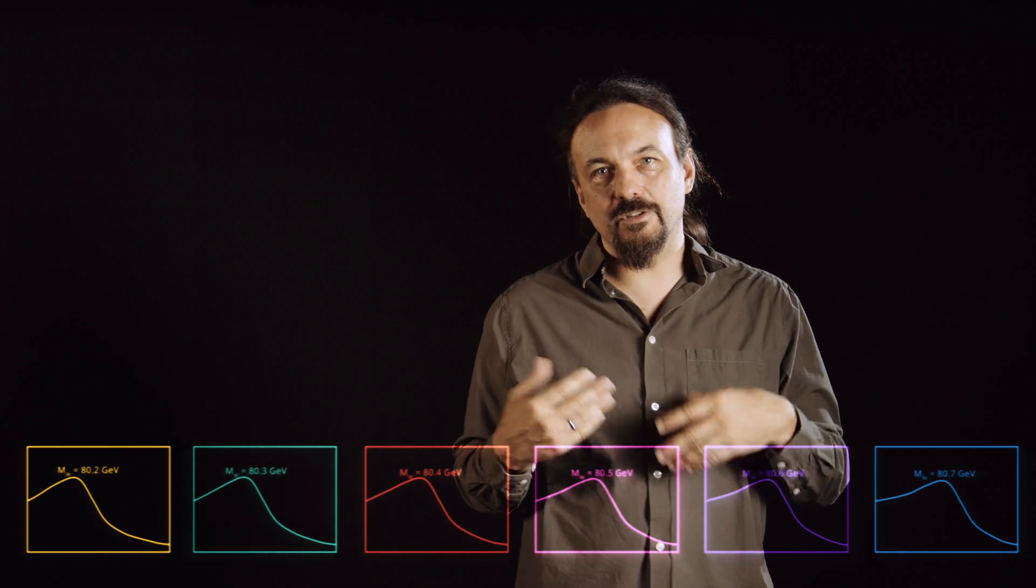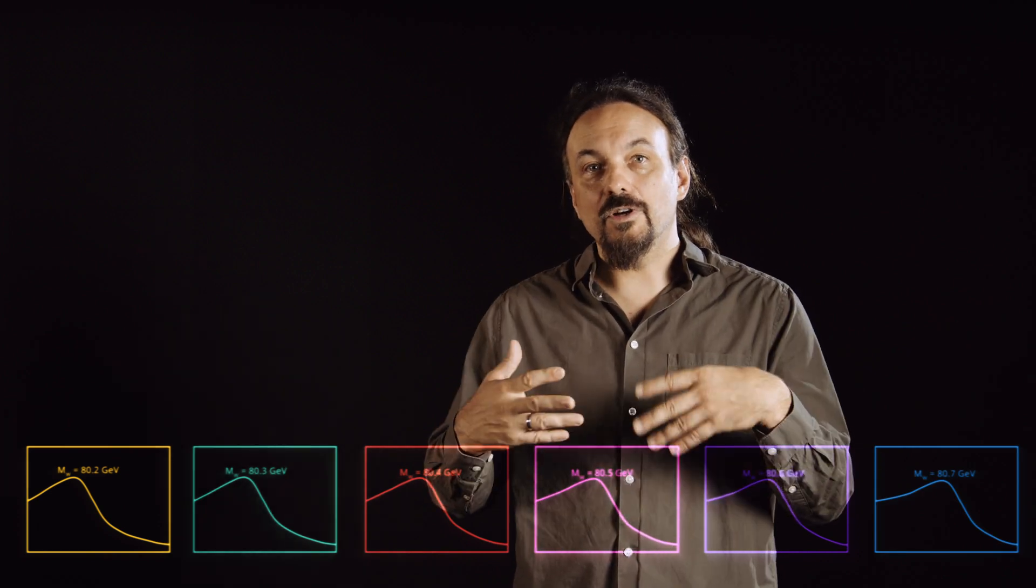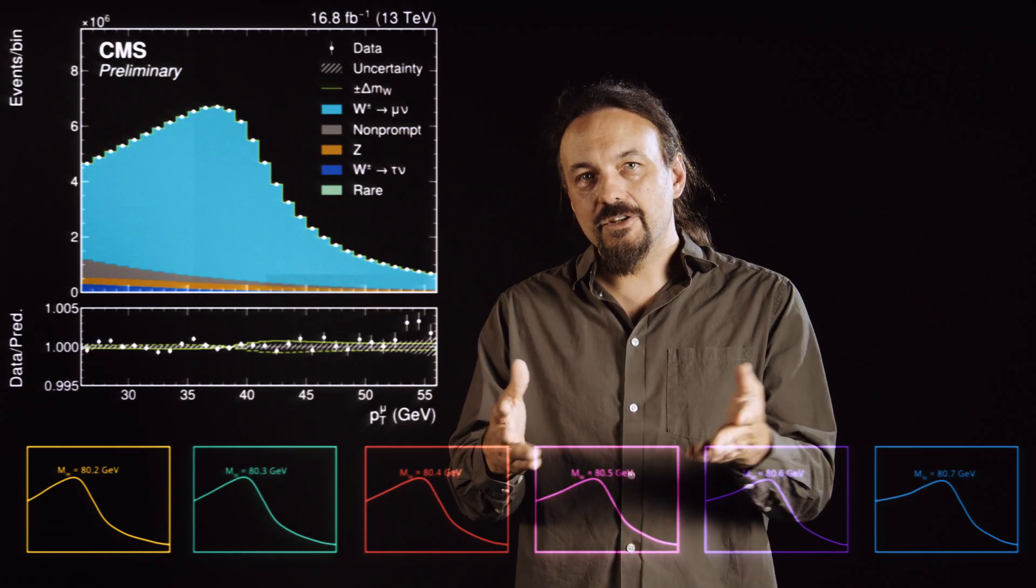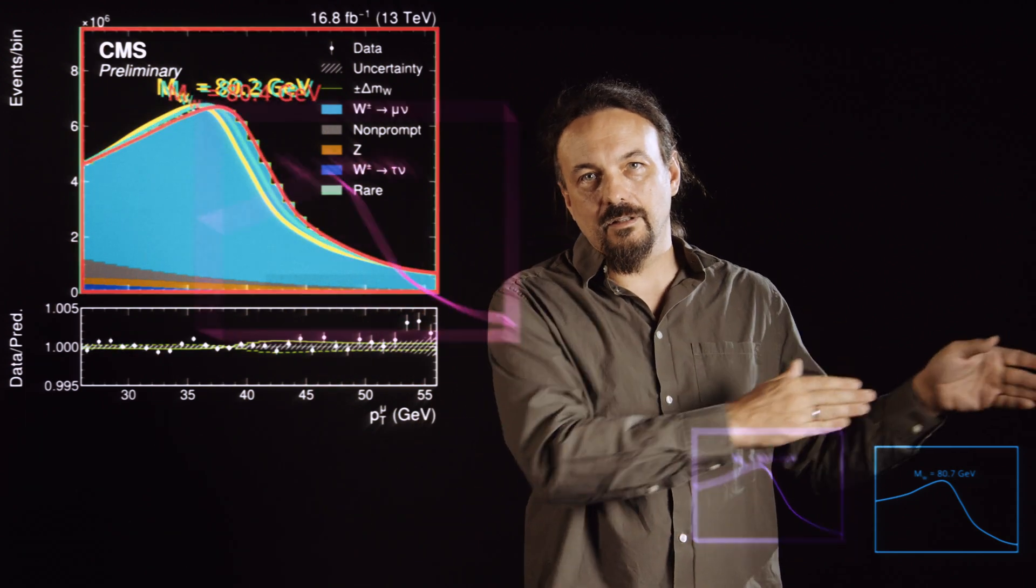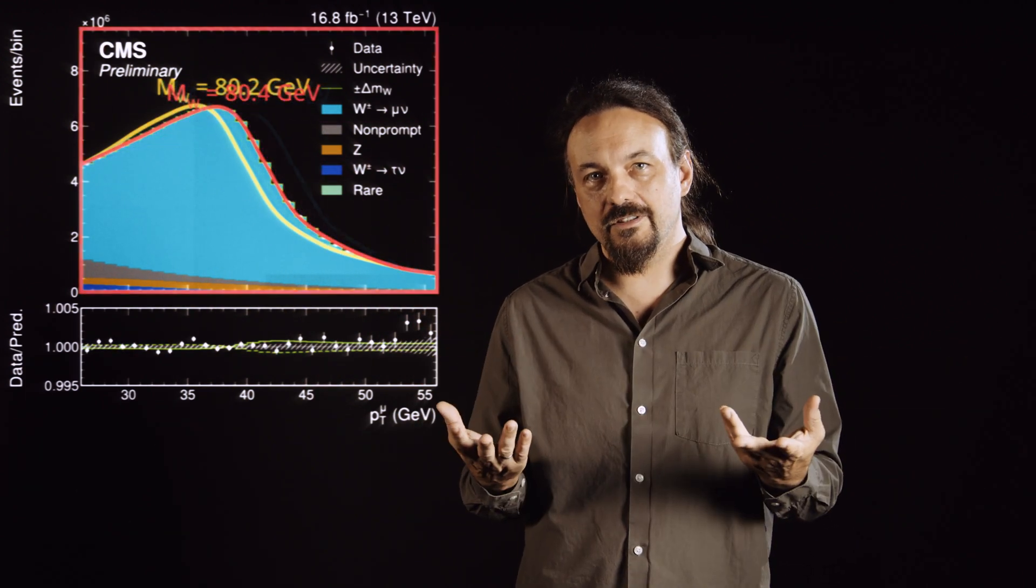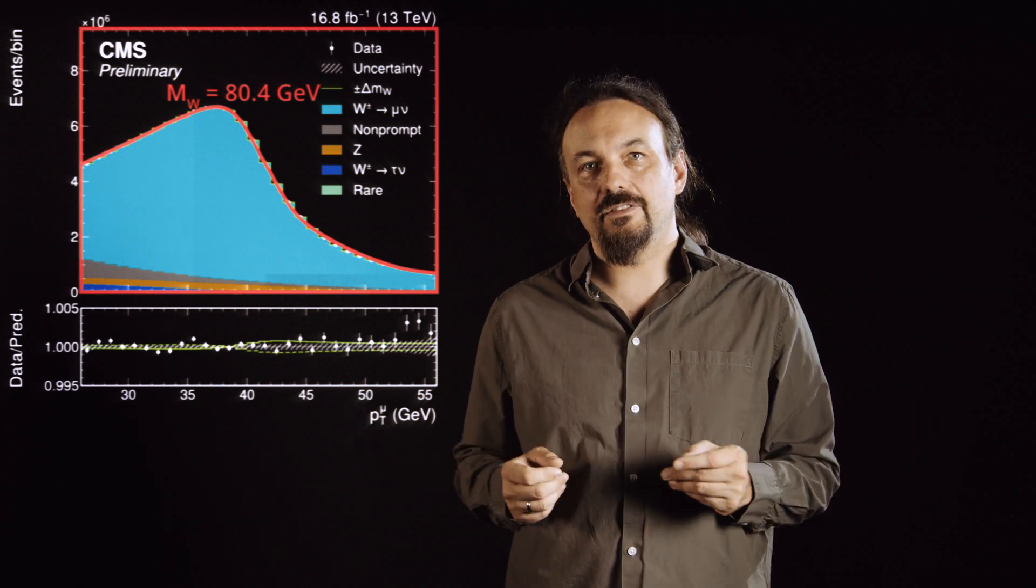So what you have to do is simulate this momentum distribution for different values of the W mass. And then once you have the observed data, you can check which of the simulated plots matches your observation the closest. And that gives you the mass of the W.